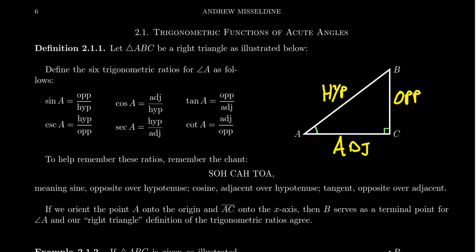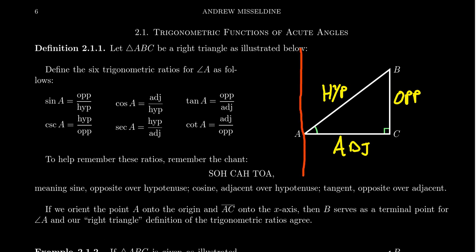Now, we've defined the six trigonometric ratios for an angle previously — is there any potential confusion? Am I thinking of this as an angle of a triangle or the angle of a plane? It turns out there's no confusion, because if we put this triangle in the following orientation — aligning the adjacent side on the x-axis so that point A is at the origin — then the opposite side runs parallel to the y-axis, and we've placed the triangle so that angle A is in standard position.